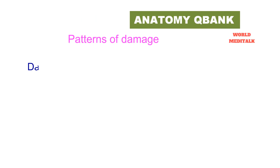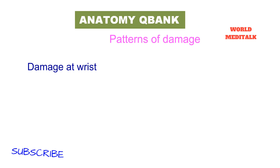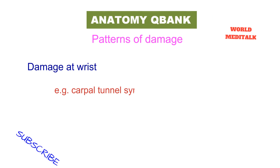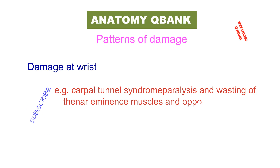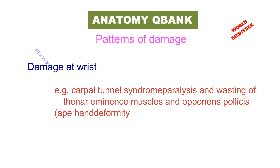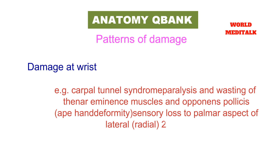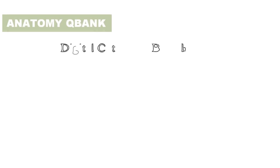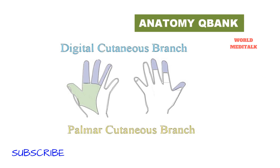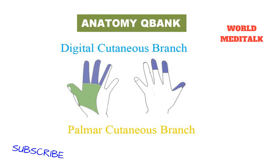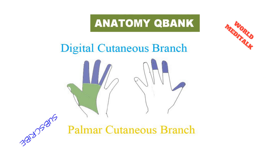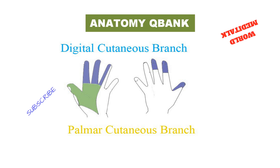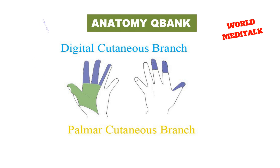Now let's talk about the pattern of damage. Damage at the wrist will cause carpal tunnel syndrome. Paralysis and wasting of the thenar eminence muscles and opponens pollicis will cause ape hand deformity. Sensory loss to the palmar aspect of the lateral radial two and a half fingers. Damage at the elbow will cause inability to pronate the forearm, weak wrist flexion, and ulnar deviation of the wrist. The anterior interosseous nerve, a branch of the median nerve arising just below the elbow, results in loss of pronation of the forearm and weakness of the long flexors of the thumb and index finger.